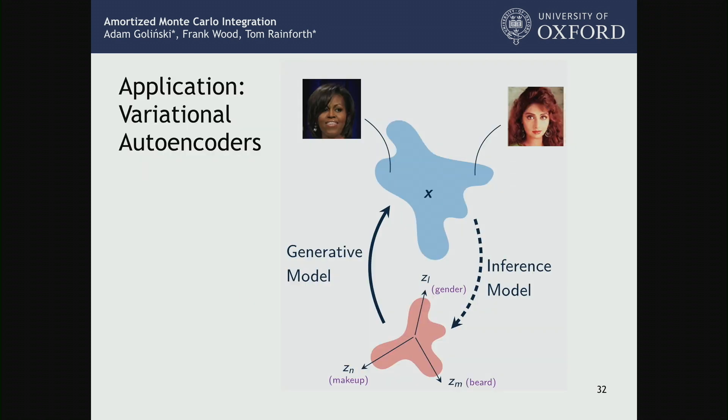To give another example, the canonical use case for amortized inference is variational autoencoders, where we're simultaneously learning a model — for example, to produce faces of celebrities — while learning how to solve inference within it. We're learning this amortized inference to help train the model in the first place, which might go from features like gender or having a beard to construct images. We also need to run inference between these, and you can calculate the relevant expectation very quickly by carefully figuring out how to do that inference.